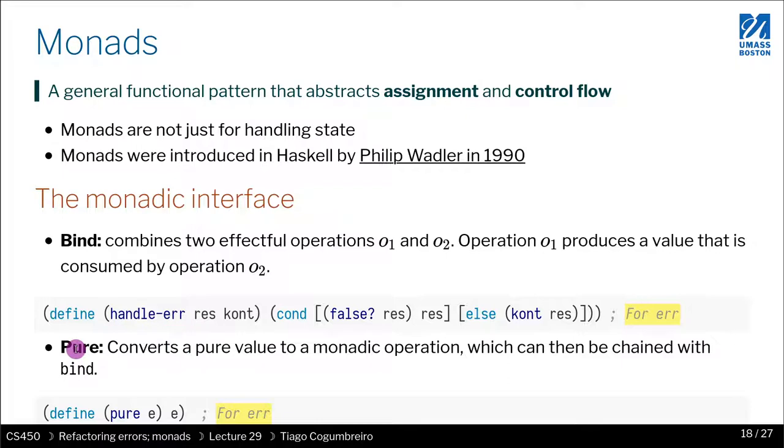And there's also the second operator, which is pure, which converts a pure value to a monadic value. So that is to say, how do I take something... So in our previous example was that operator that would wrap something inside an EFF. Something that does not produce an effect converts that into an effect. So it would just return. It's the base case of evaluation.